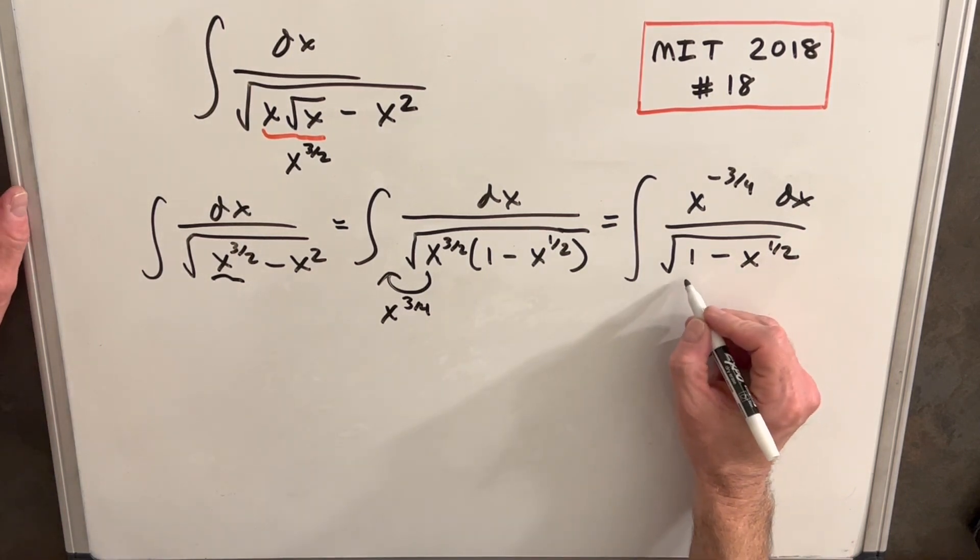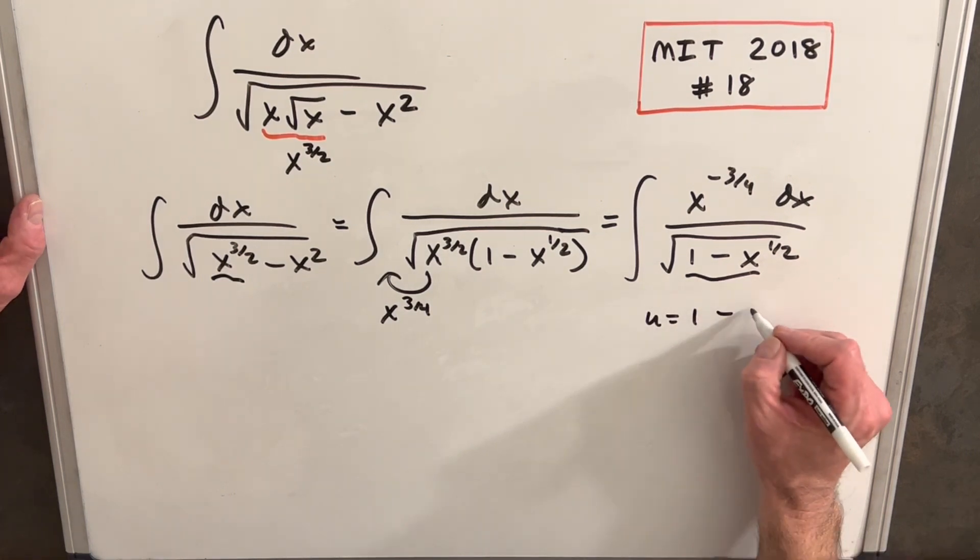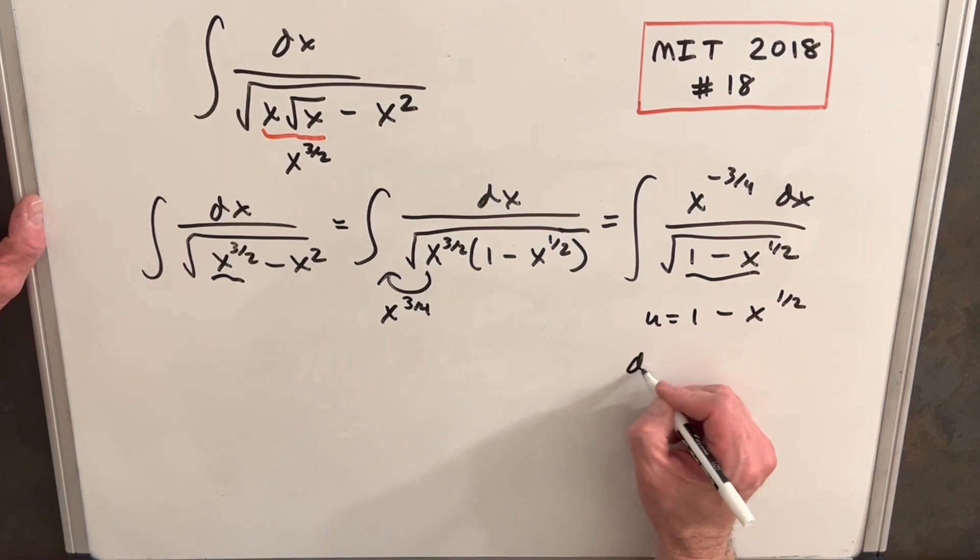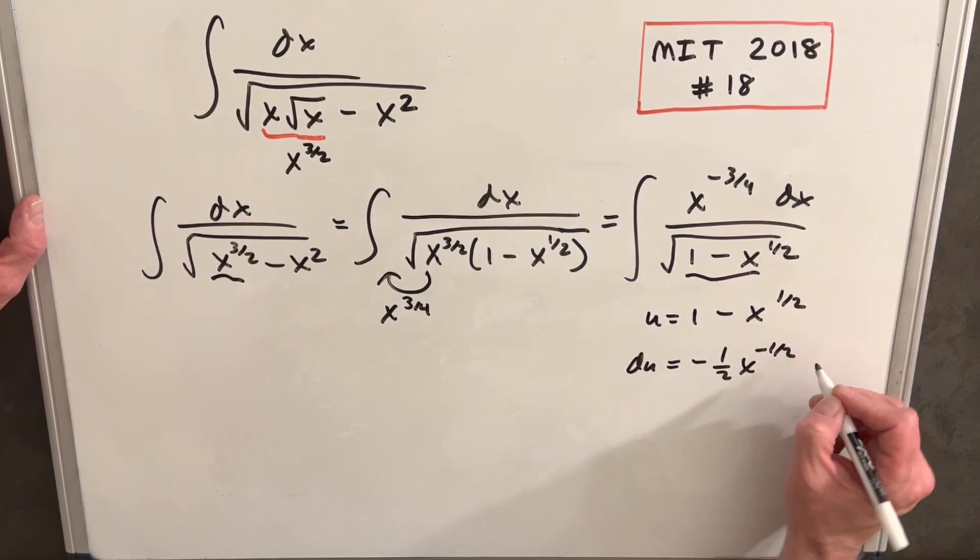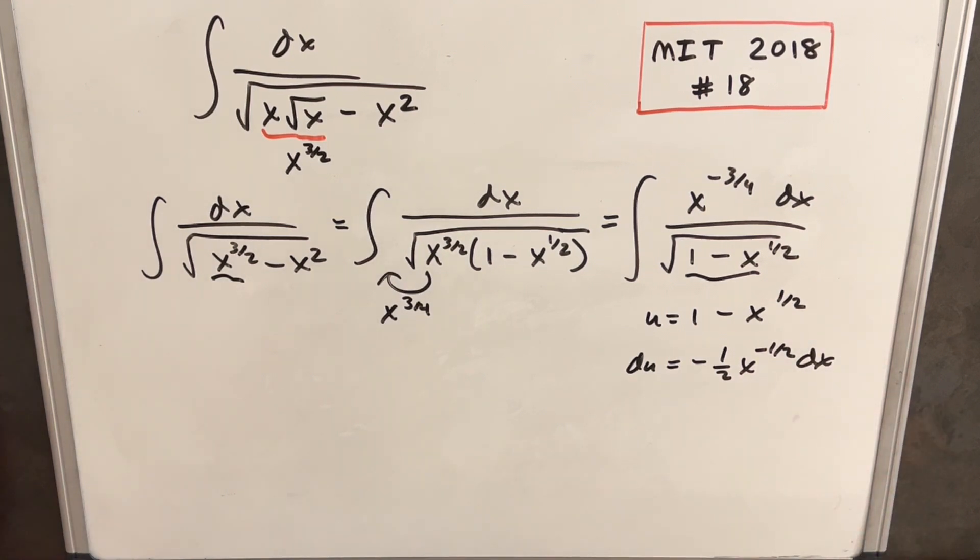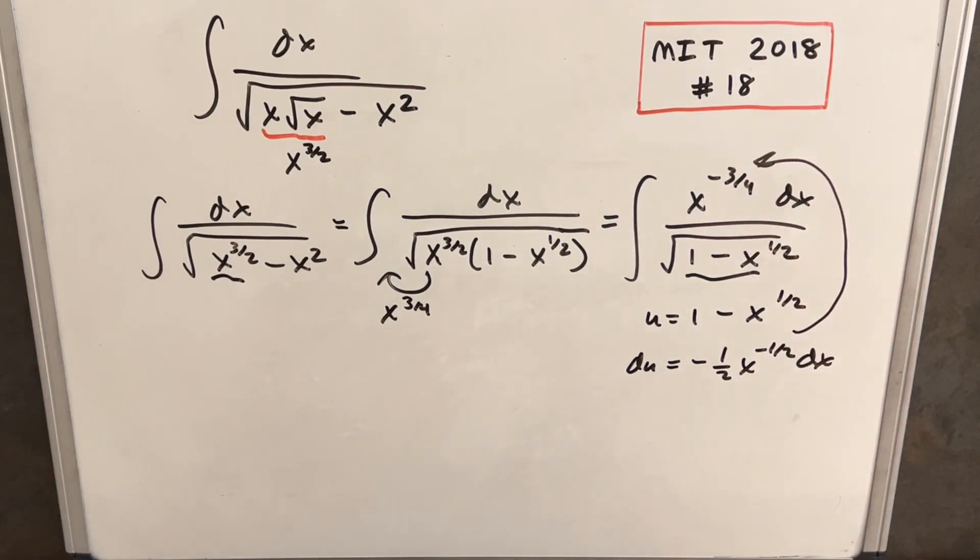What I'm going to try is, let's make this whole thing our u. So we'll say u equals 1 minus x to the 1 half. Then when we take our du, we're going to have minus 1 half x to the minus 1 half dx. And that's not good. That's kind of a problem because what we want is we want it to look a lot more like our x to the minus 3 fourths. And so let's try this a different way.